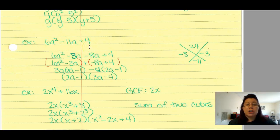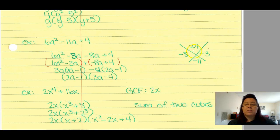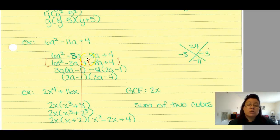Let's do 6a² − 11a + 4. Is there a GCF? No. Is it a perfect square? 6 is not a perfect square, so no. Because of the leading coefficient I'll use the X method. 6 times 4 is 24. I need two numbers that multiply to 24 and add to −11. Negative 8 times negative 3 gives positive 24, and −8 plus (−3) gives −11. I rewrite −11a as −8a + (−3a), then use grouping, giving factors (2a − 1)(3a − 4).